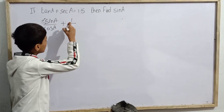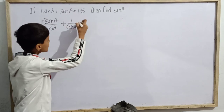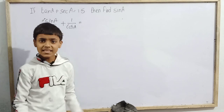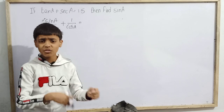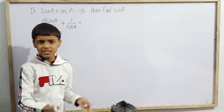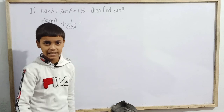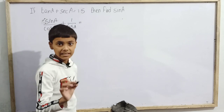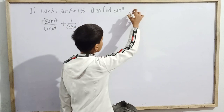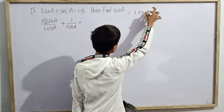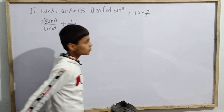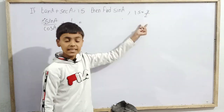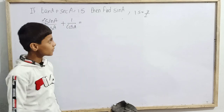This equals 1.5. Since 1.5 is a decimal and can be confusing to work with, we convert it to a fraction. 1.5 is equal to 3/2, because 3 divided by 2 gives 1.5. So we rewrite the equation with 3/2 on the right-hand side.